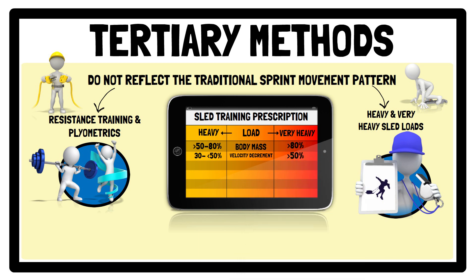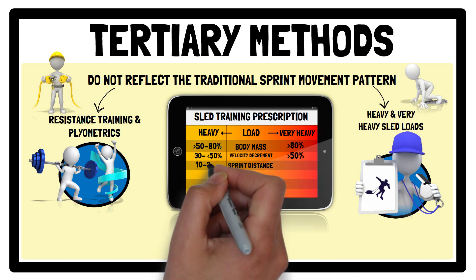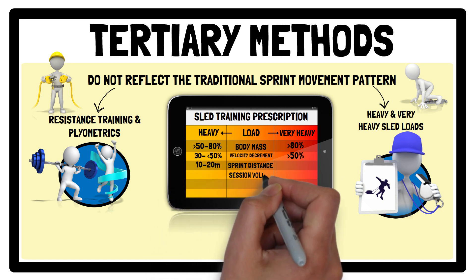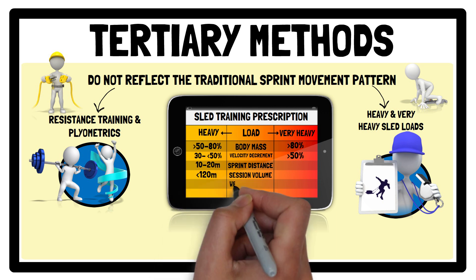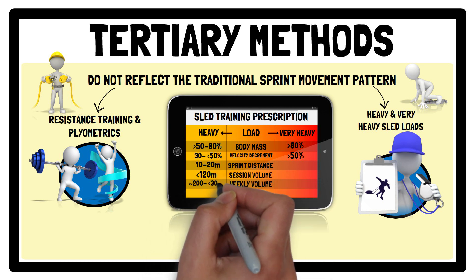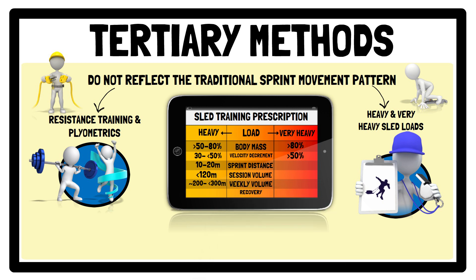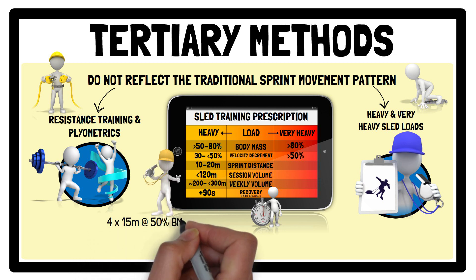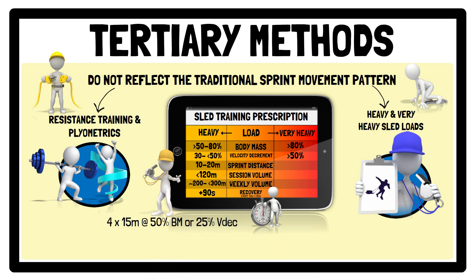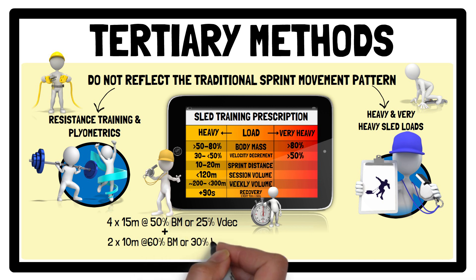Regarding heavy sled load prescription, a sprint distance of between 10–20 metres and a session volume of less than 120 metres, with a weekly volume of around 200–300 metres, is recommended. Regarding recovery times, this should be 1 minute for every 10 metres of unresisted sprinting, with an added 90 seconds for heavy loads. A session example using heavy sled loads includes completing 4x15 metres at 50% body mass or 25% velocity decrement, and 2x10 metres at 60% body mass or 30% velocity decrement.